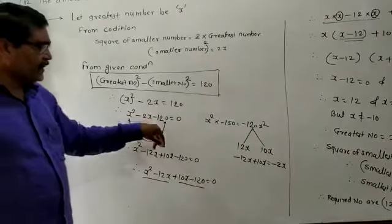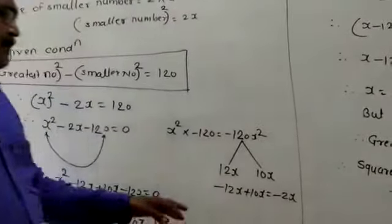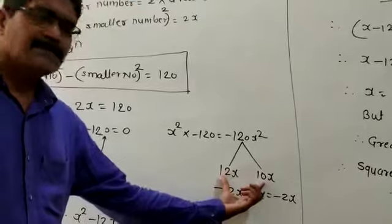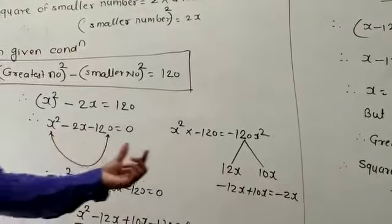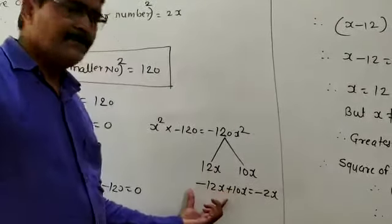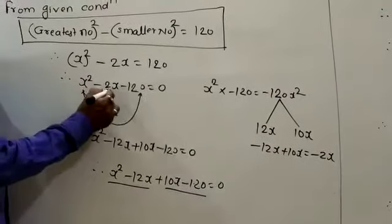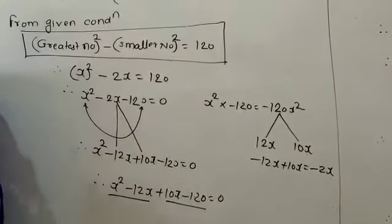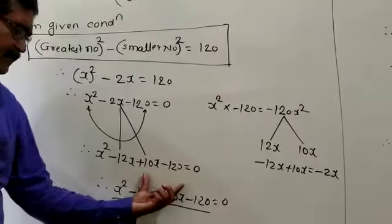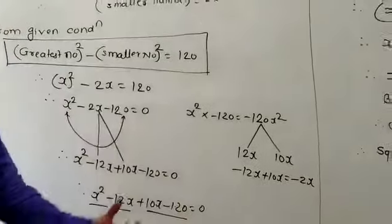Now do the product of the first term and the last term: x squared multiplied by minus 120 equals minus 120x squared. You have to factorize minus 120x squared so that the sum of the factors gives the middle term. The middle term is minus 2x, so I will take the factors as 12x and 10x. For minus 2x, the bigger number gets the minus sign: minus 12x plus 10x equals minus 2x.